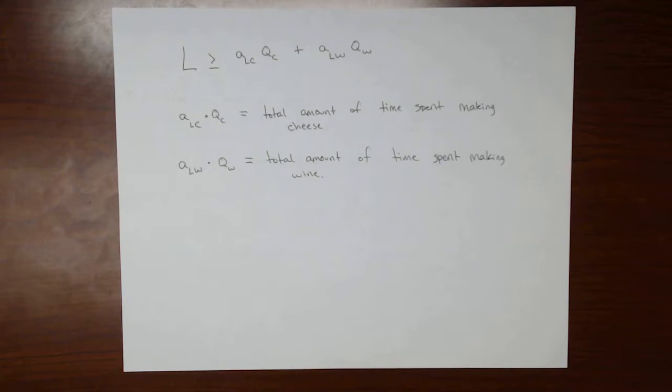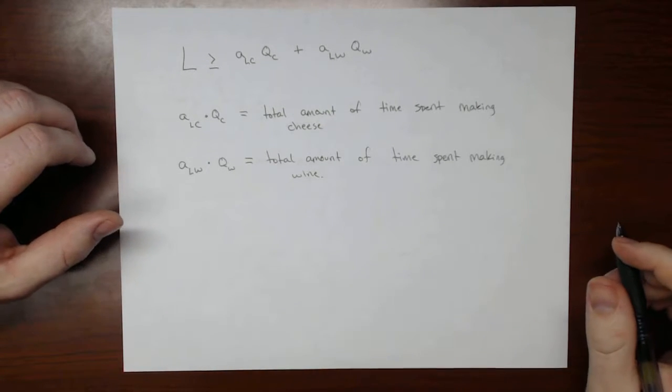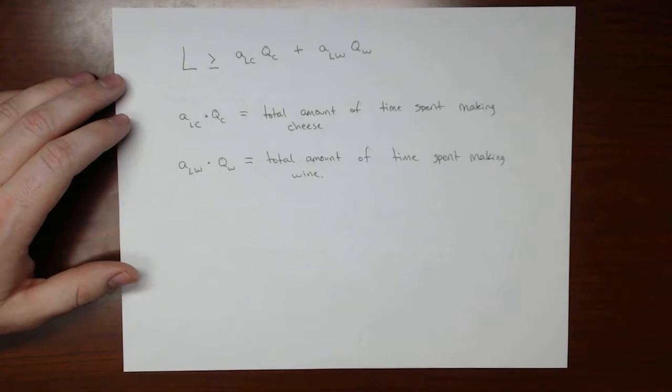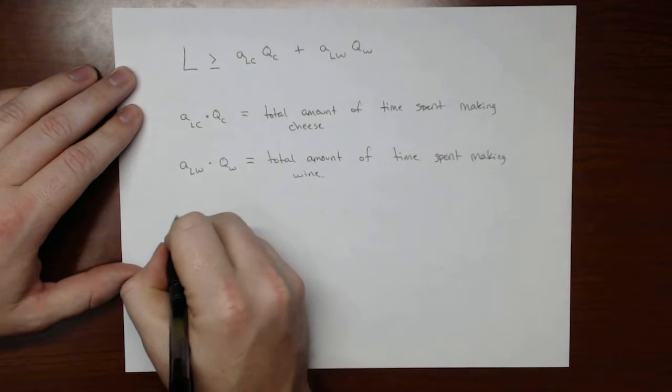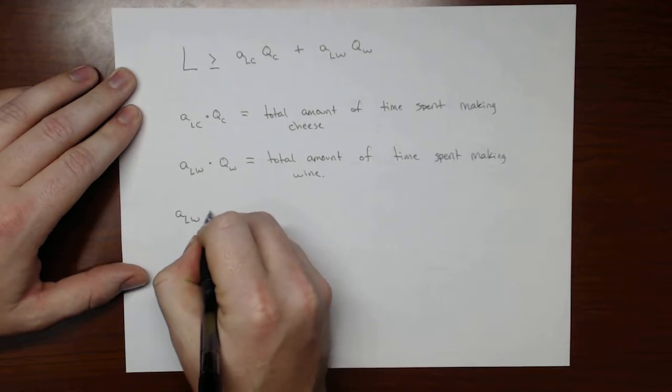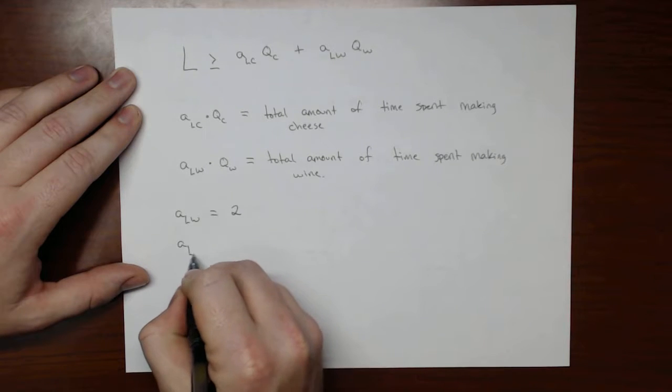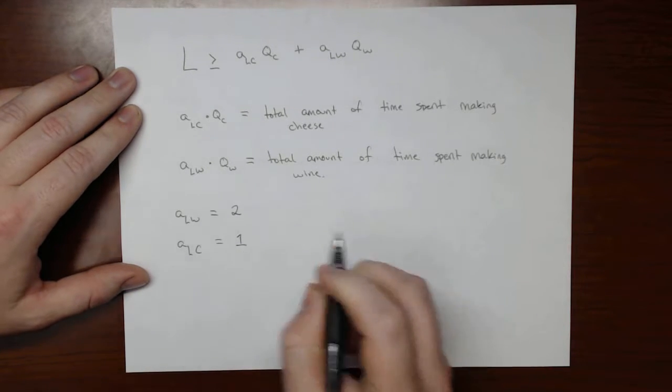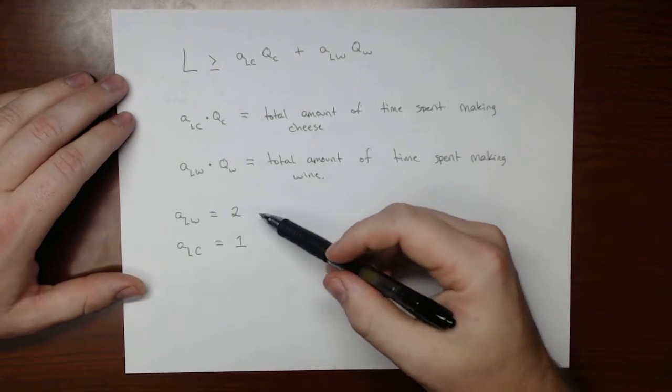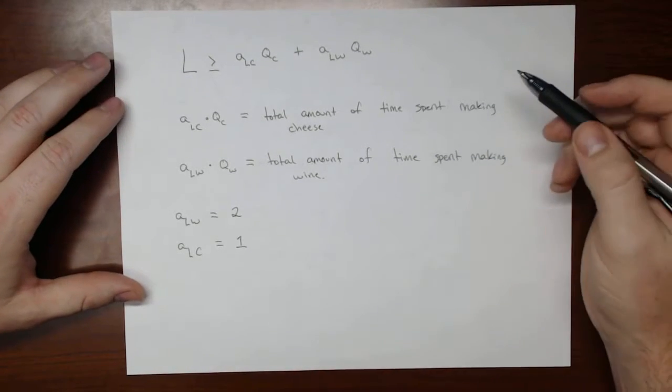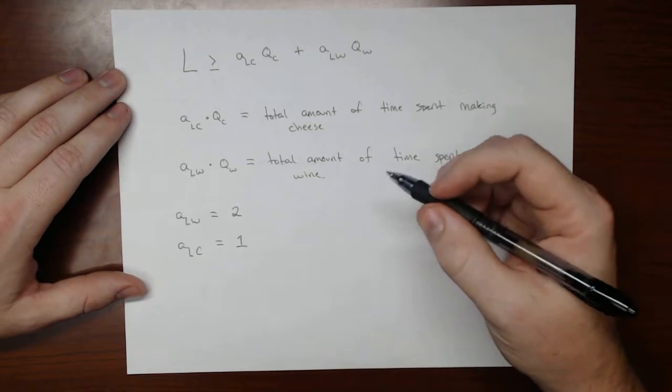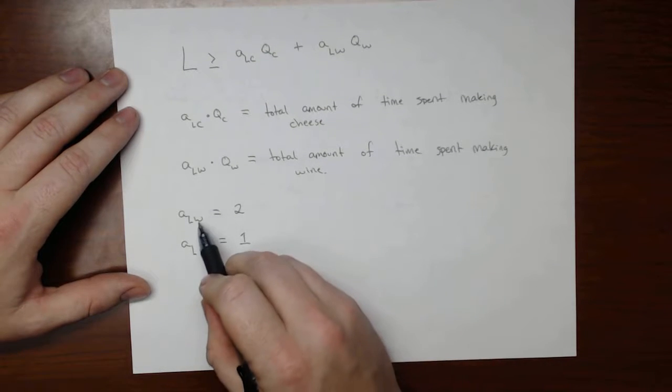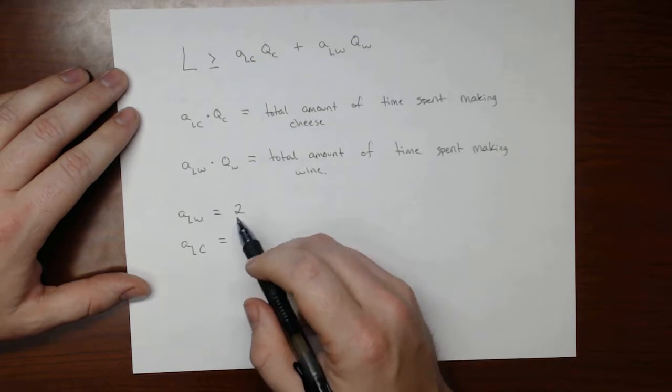And so this gets us our total amount of production that can happen. So let's assign some numbers to these things. So let's stick with ALW equals 2 and ALC equals 1. And notice that we are defining these things as their inverse, so if it were to take less time, or if people were to be more productive at producing wine, then this number here would go down.